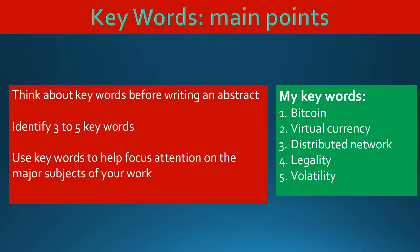Keywords — main points. When writing a scholarly work, it is important to think about keywords before writing an abstract. You should identify three to five keywords, and basically you use these keywords to help focus attention on the major subjects of your work. My keywords are Bitcoin, virtual currency, distributed network, legality, and volatility. Those are the focus of my project, and whether I put these words explicitly in my project or not, I will keep these words in mind as I write my abstract.